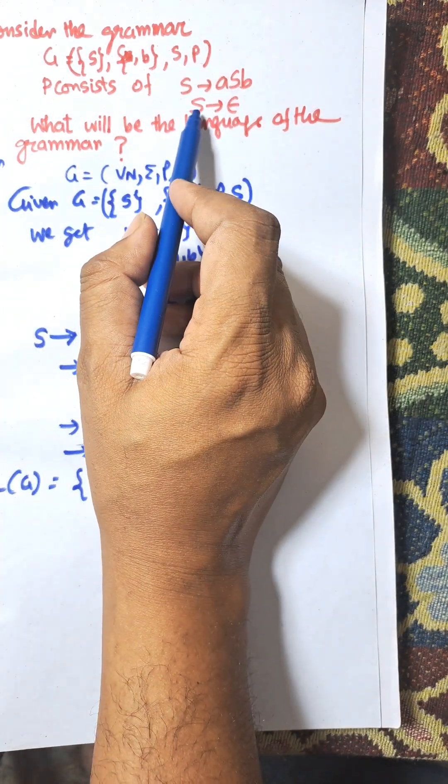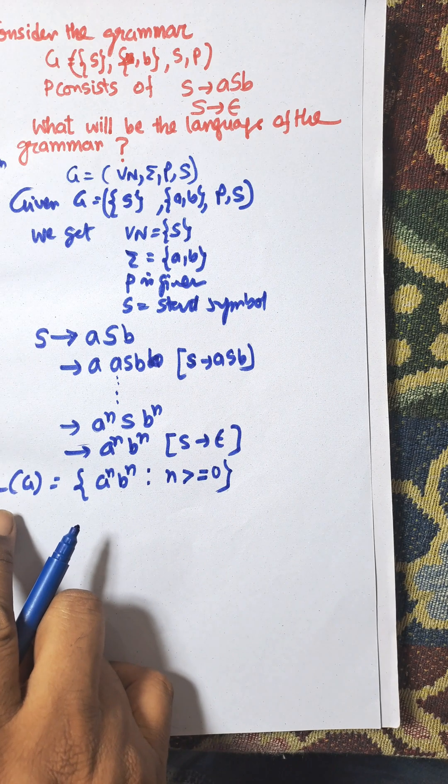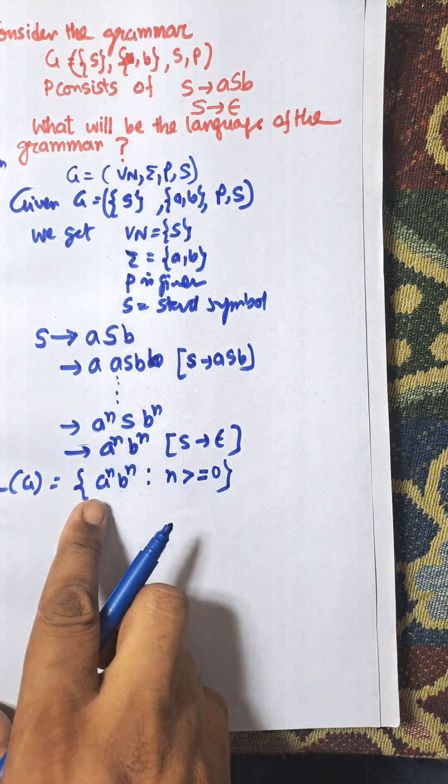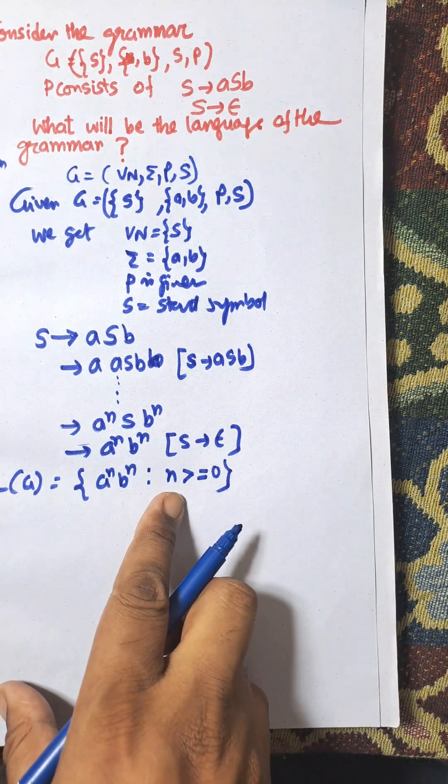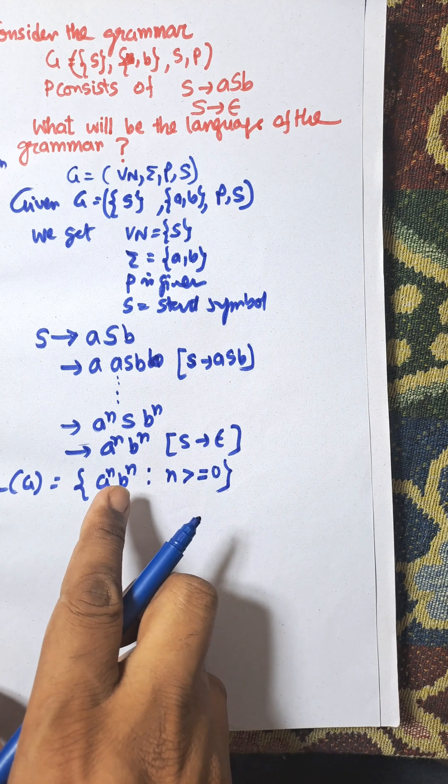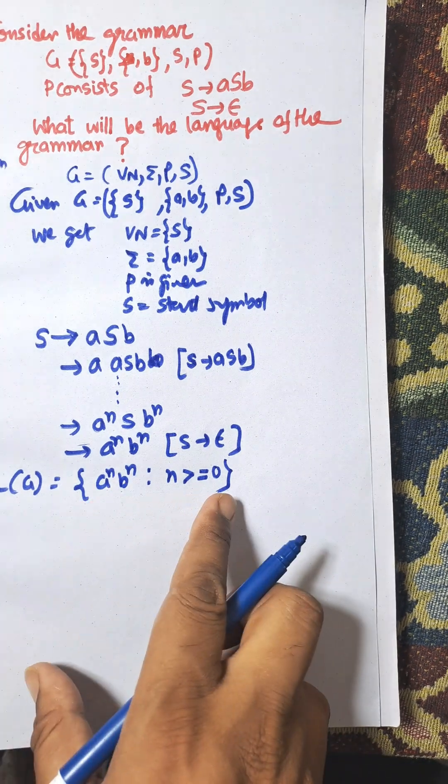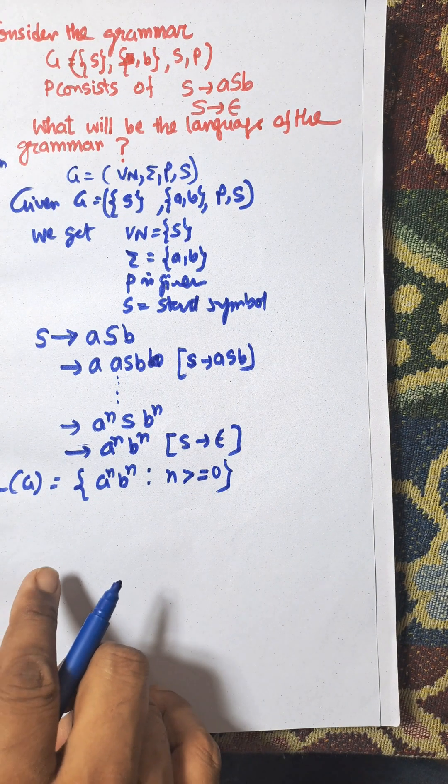In case S is not epsilon, then n will be one. From the above problem, the language of the grammar is a^n b^n and n is greater than or equal to zero. Why n is greater than zero? When n equals zero then we get empty symbol, and n equals one there is ab, n equals two is aabb, and so on.